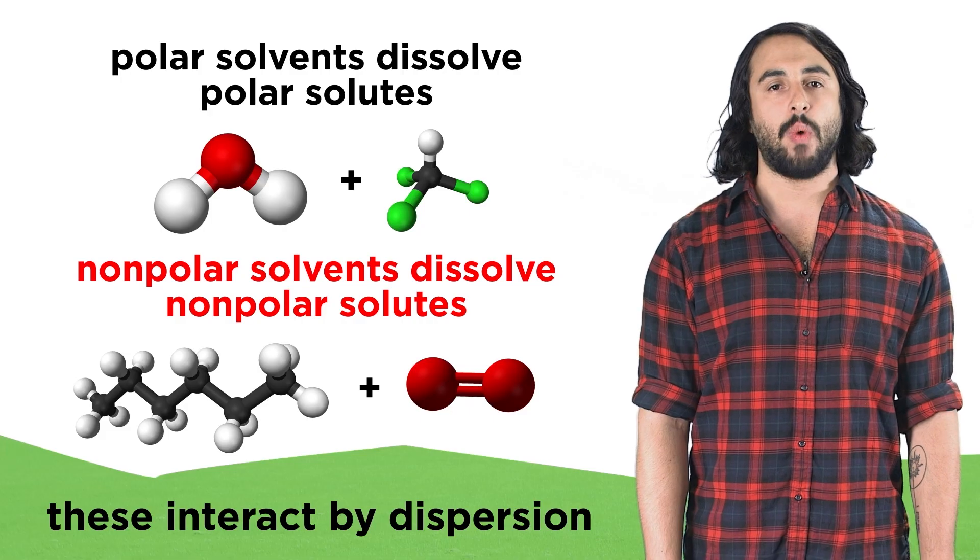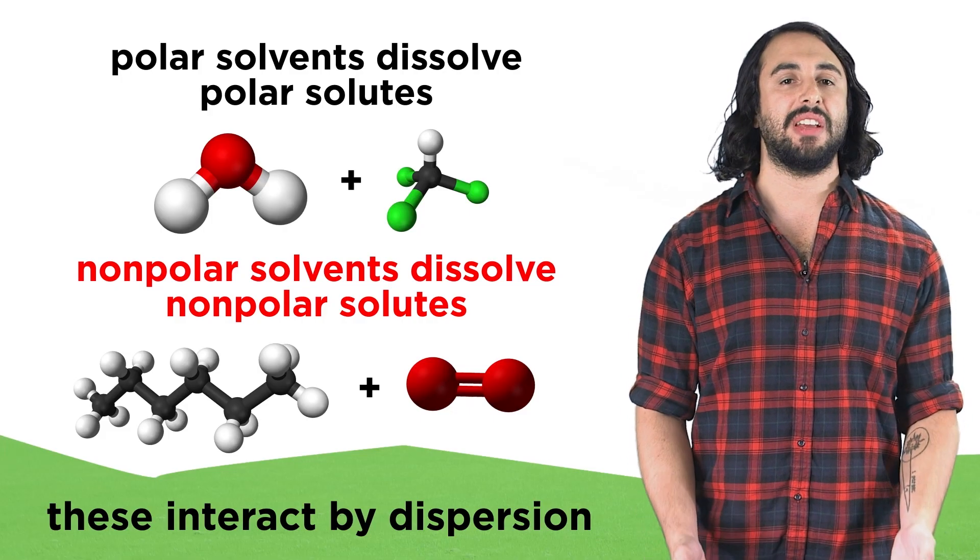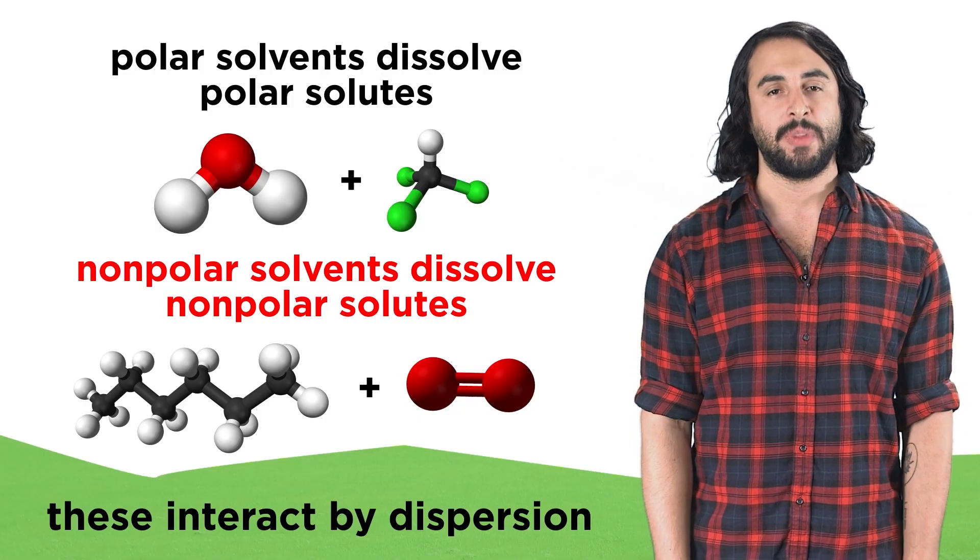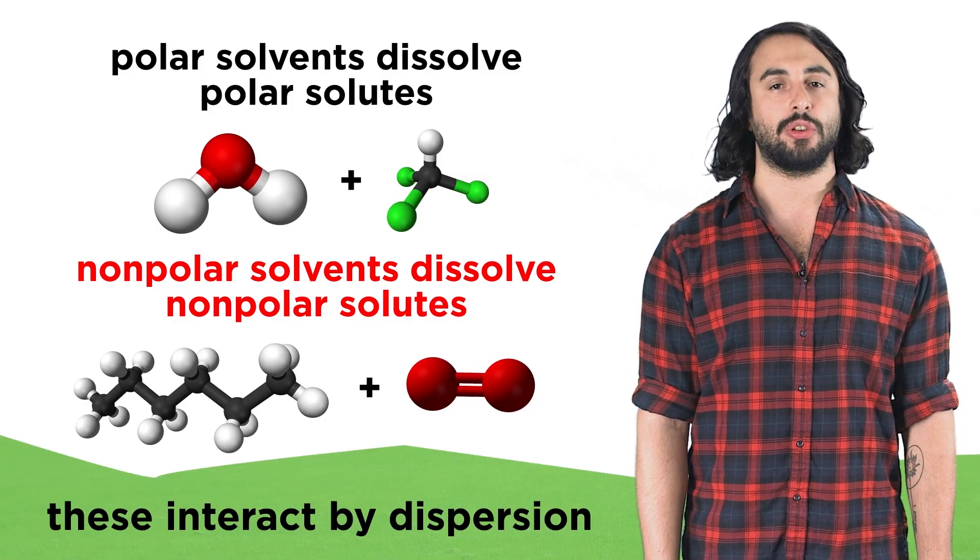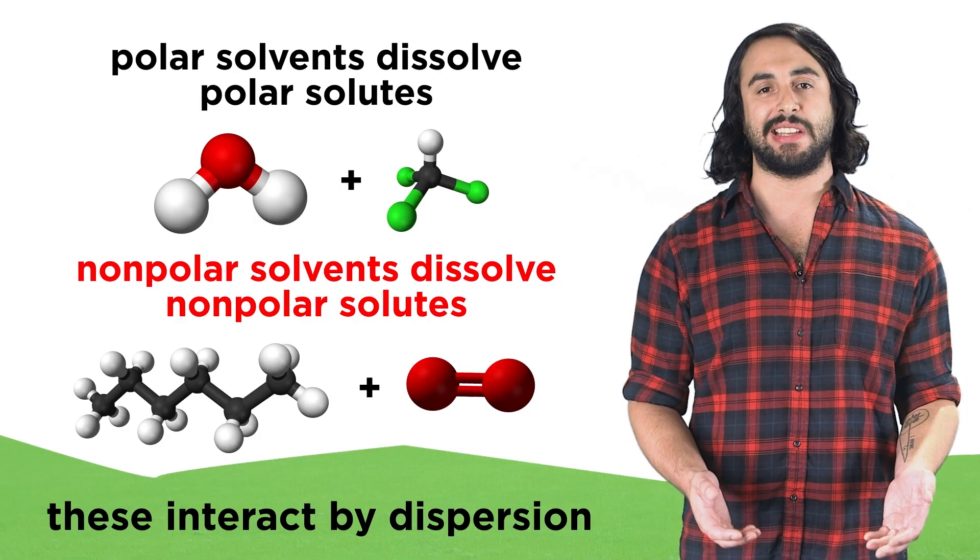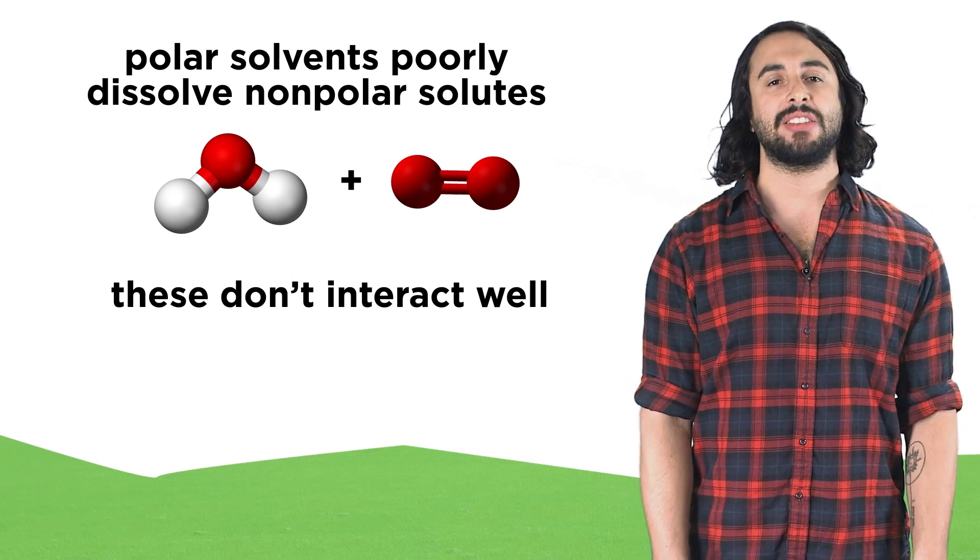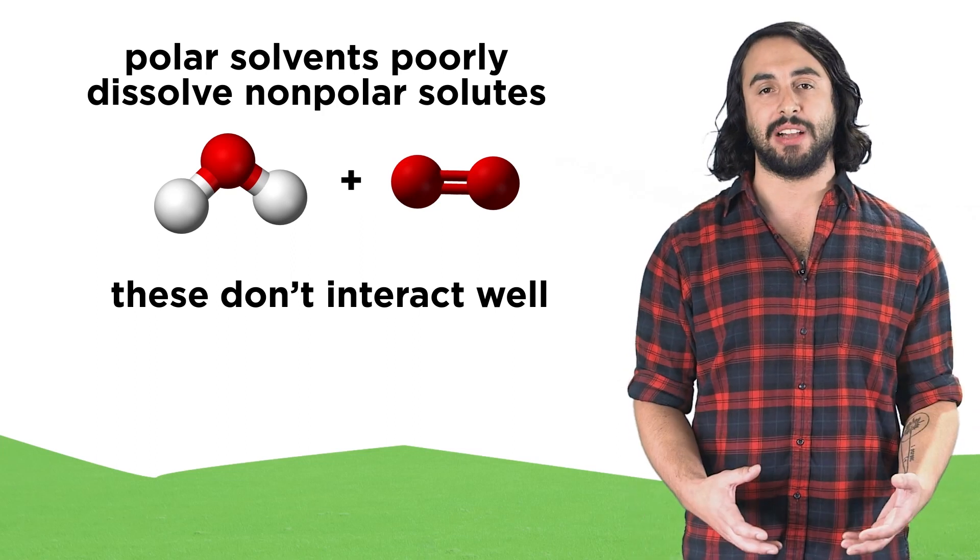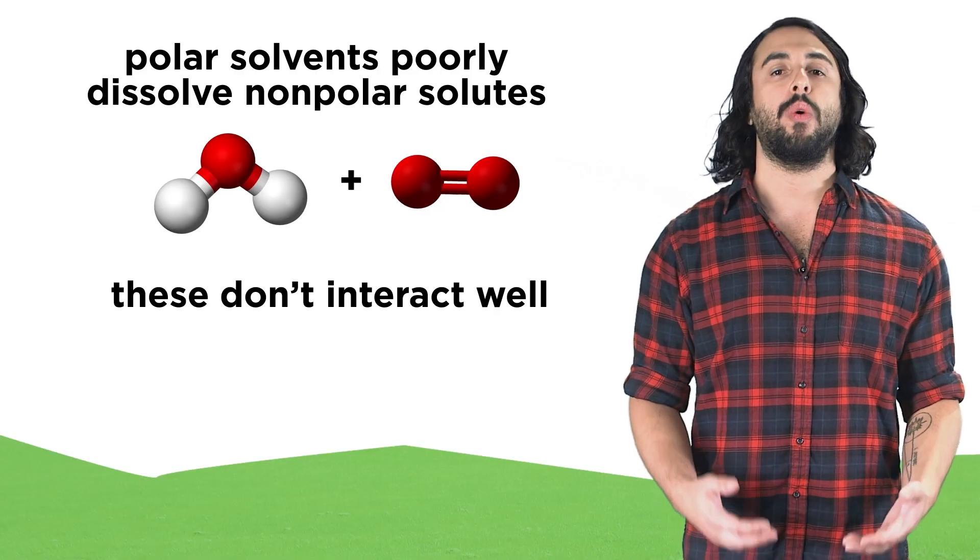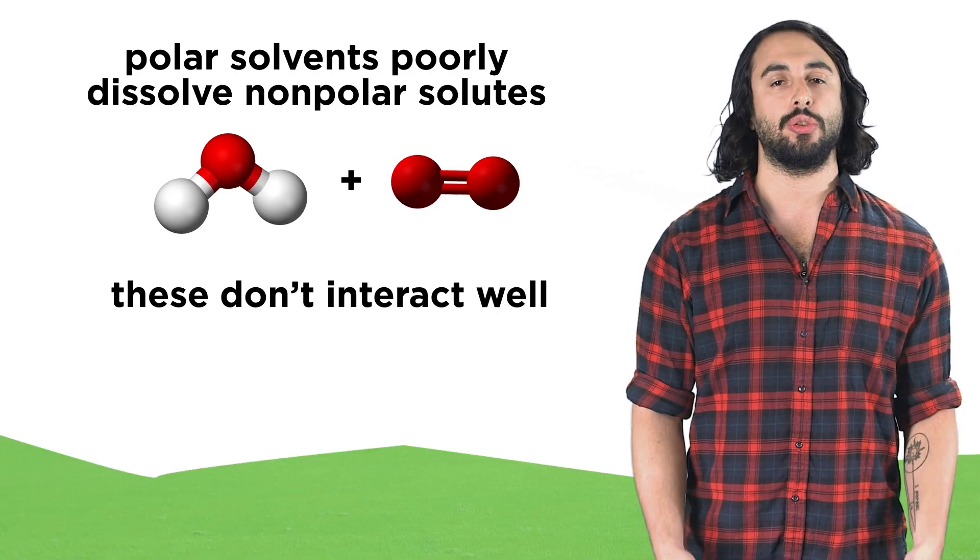This means that when oxygen dissolves in hexane, it will simply replace some of these dispersion interactions with other dispersion interactions, which is a relatively small discrepancy in energy, rather than if it is dissolved in water, where it has to disrupt the hydrogen bonds in pure water without being able to provide an equally strong interaction to replace them.